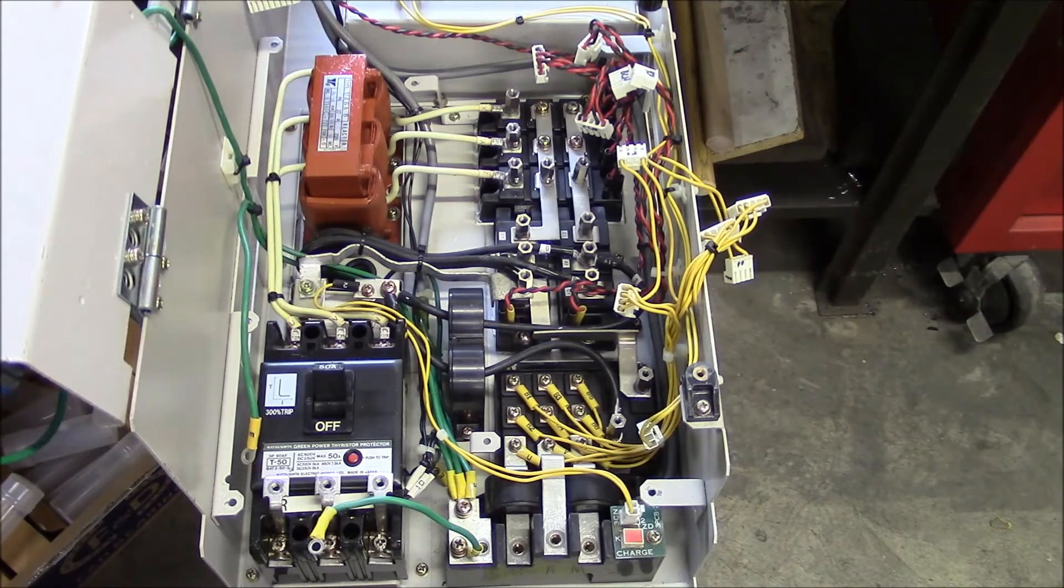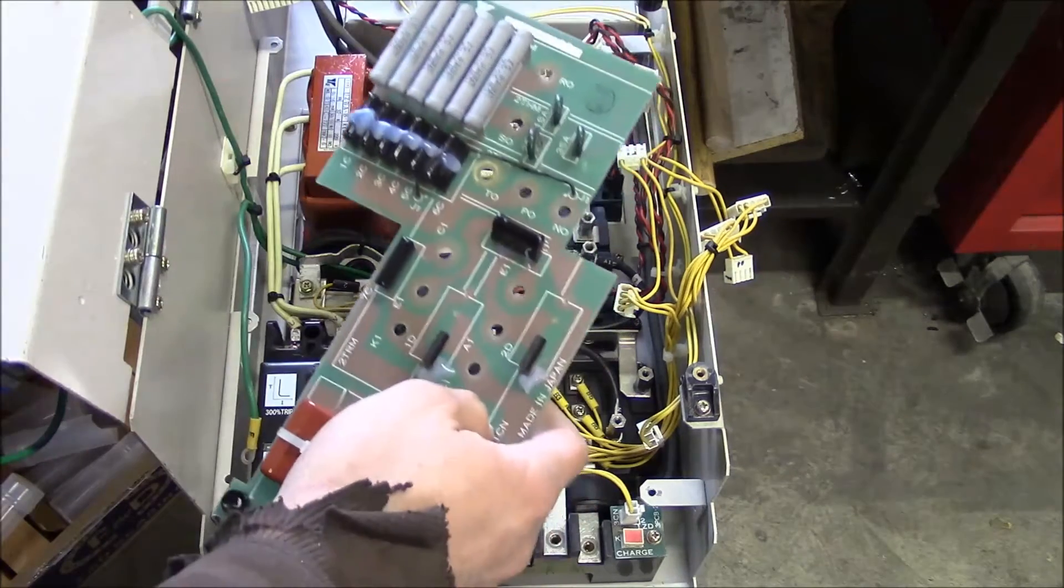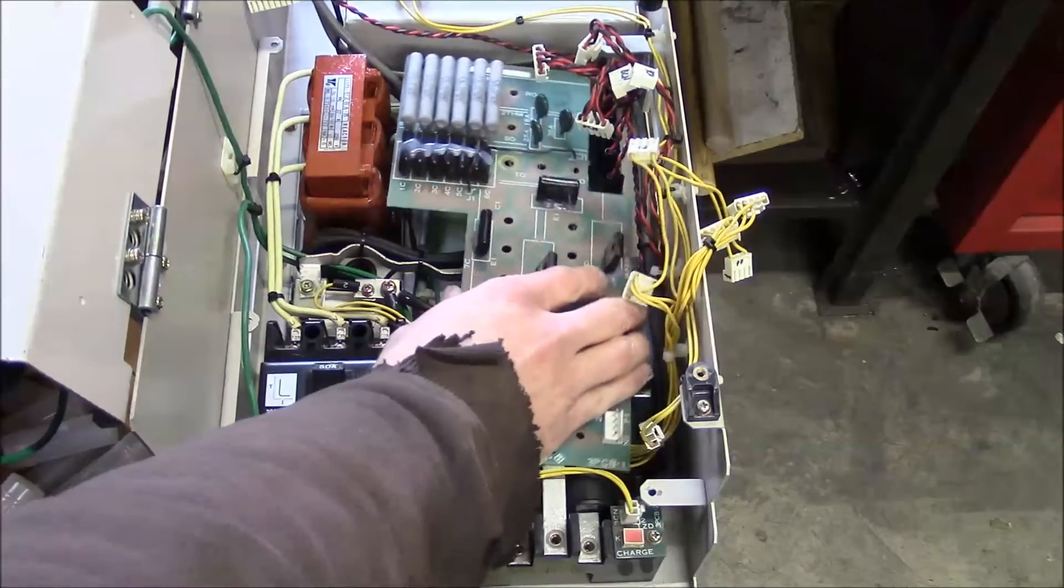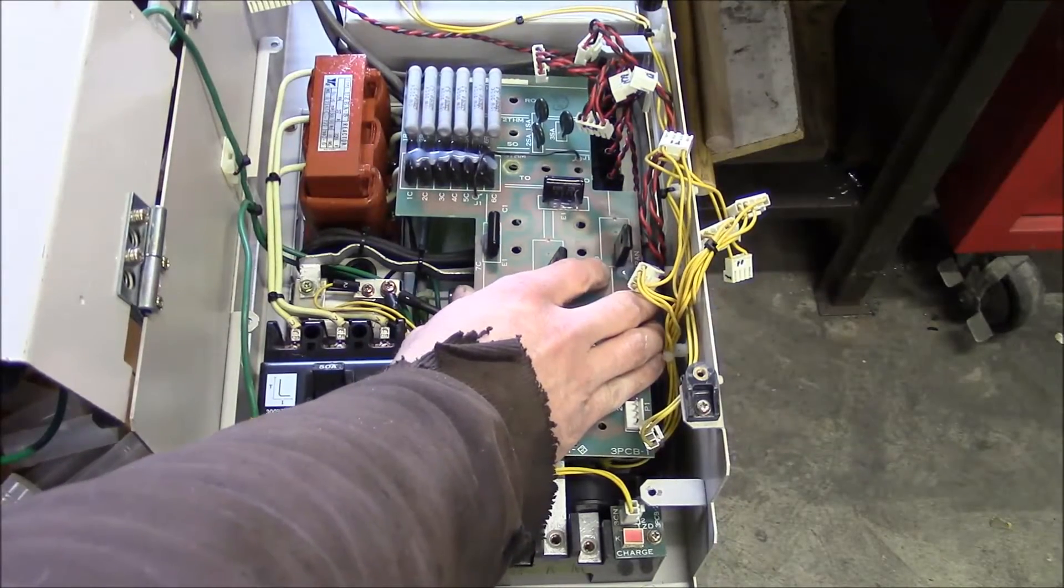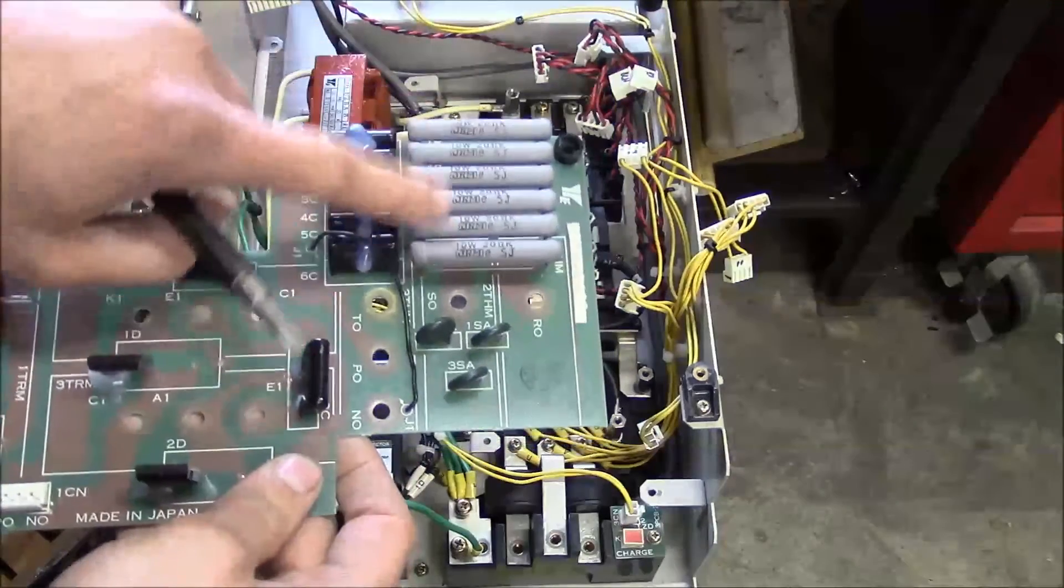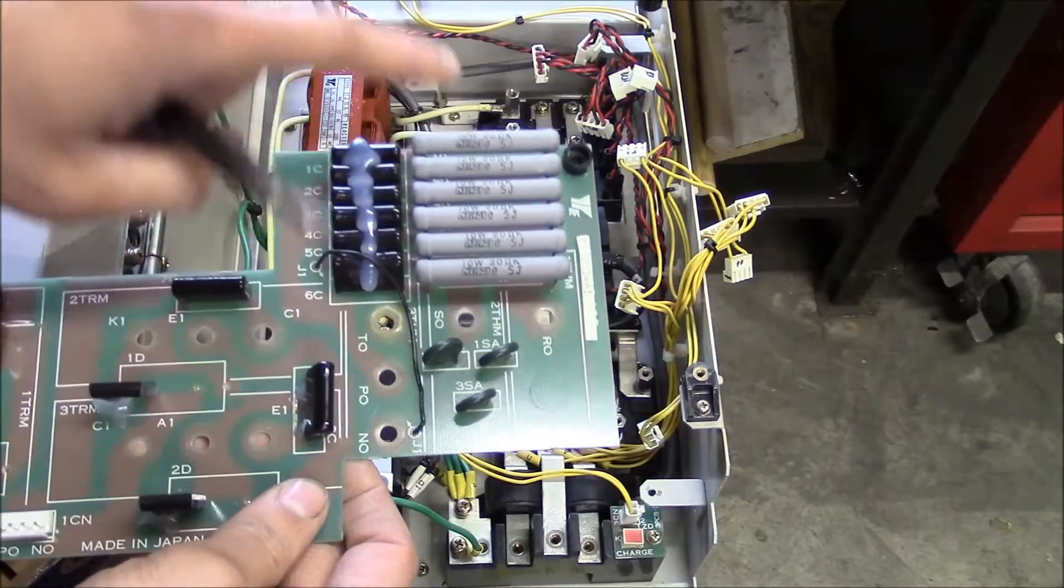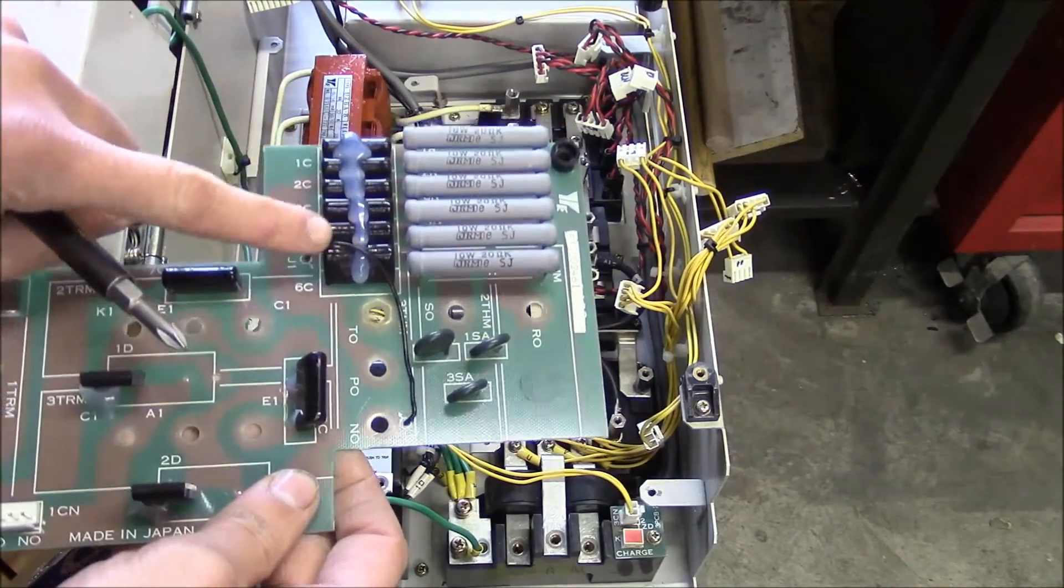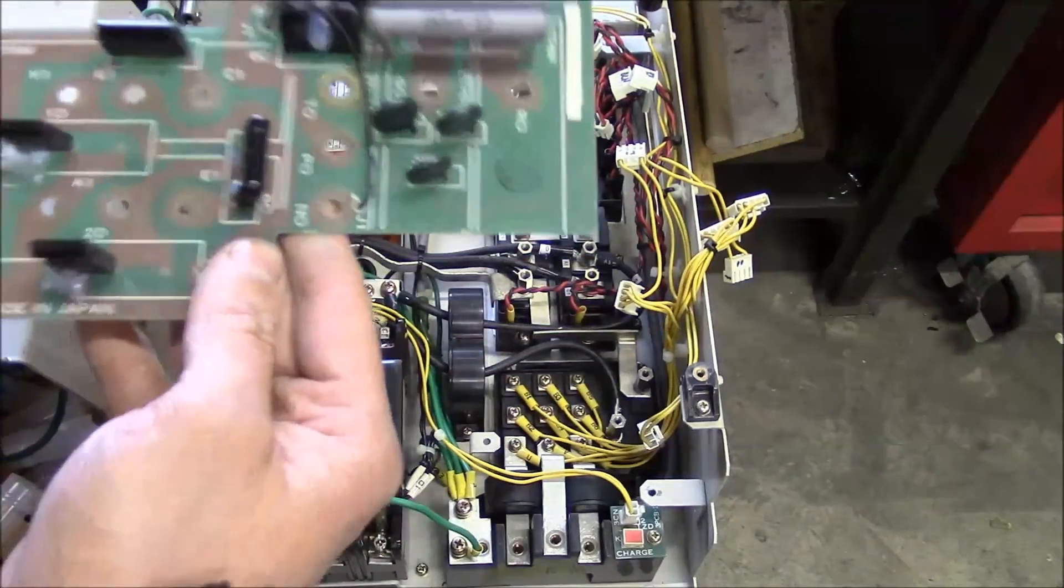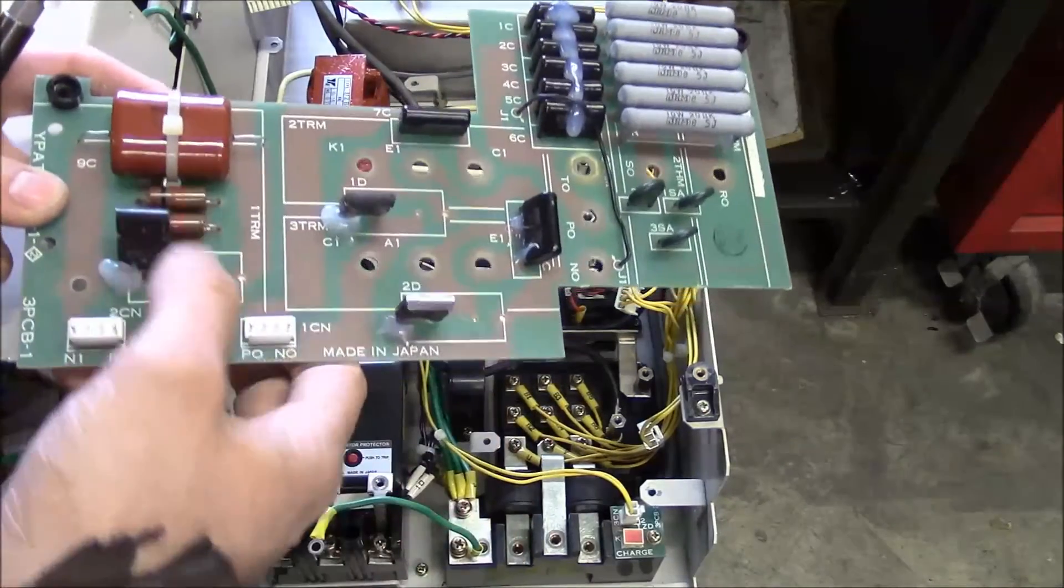The other thing that I found, this board here sits on top of the IGBTs and it's full of passive components. So there's a bunch of resistors, a pair for each phase, a bunch of capacitors, a pair for each phase, and more capacitors. And then it's got three diodes.